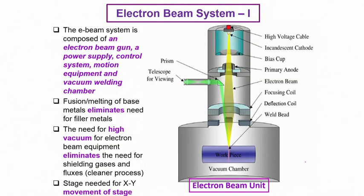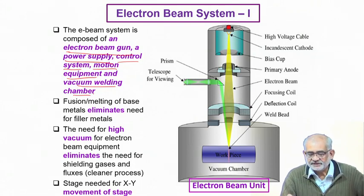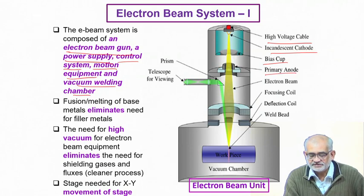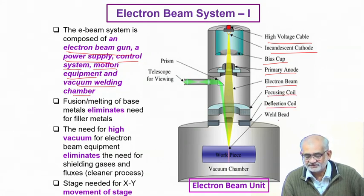Let us go straight into the configuration — you have seen this view graph in the previous lecture. Essentially these are the constructional features: we have an electron beam gun, a power supply which applies very high negative potential difference to give kinetic energy to the electrons, a control system, a sample manipulation stage, and of course a very high vacuum chamber. This is the overall setup with the high voltage cable, the tungsten cathode which emits electrons, the bioscope which deflects and shapes the beam, the primary anode with a central hole, and electromagnetic lenses for focusing as well as deflection.